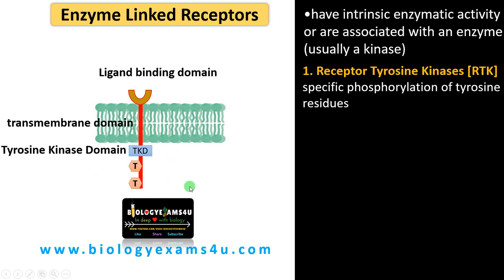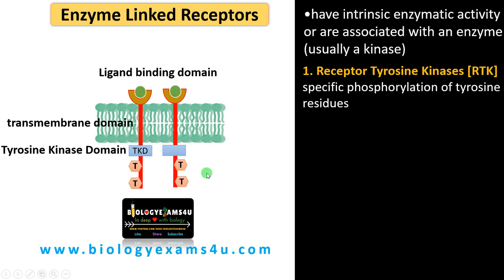We'll be discussing the tyrosine kinase receptor in detail in our next video. The receptor is often a dimer, and this shown here is the structure of a monomer. A fully activated tyrosine kinase receptor is a dimer. Upon ligand binding, the tyrosine kinase domain is activated, the monomers come together to form a dimer, and this domain phosphorylates the tyrosine residues.